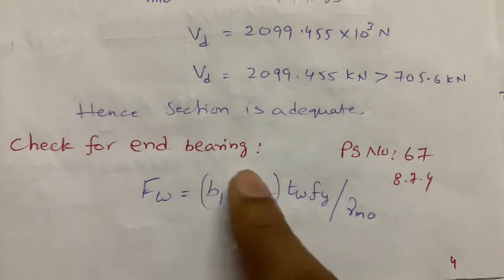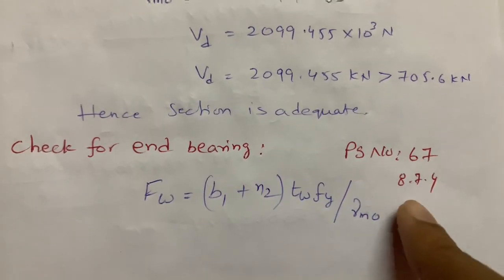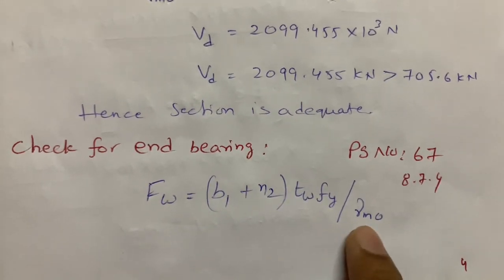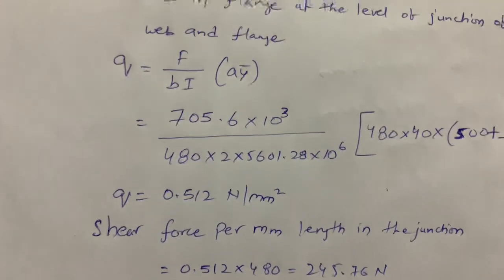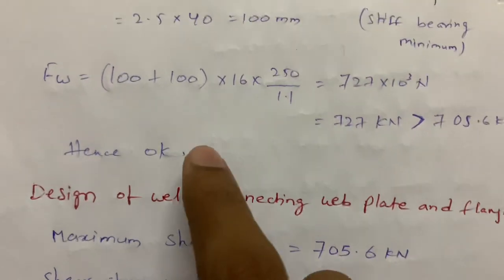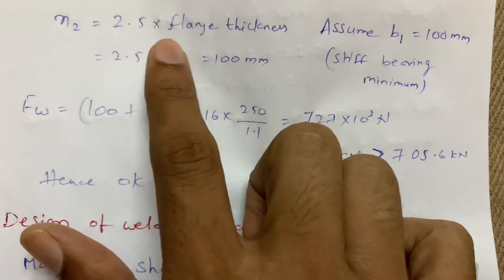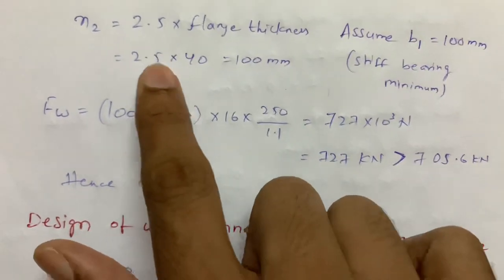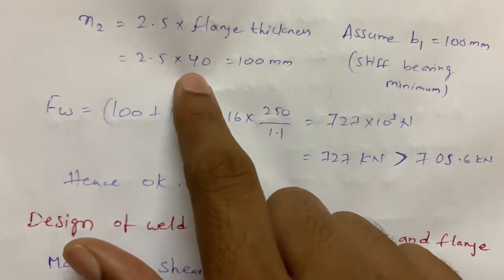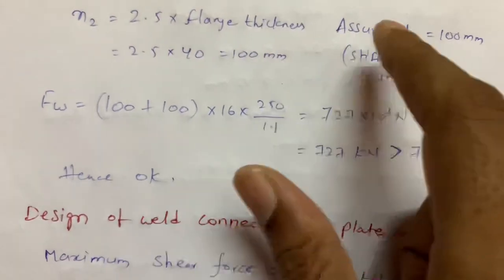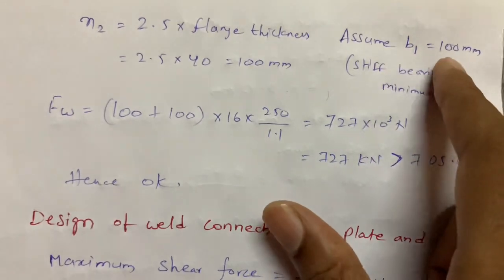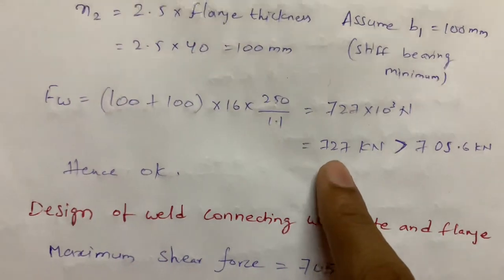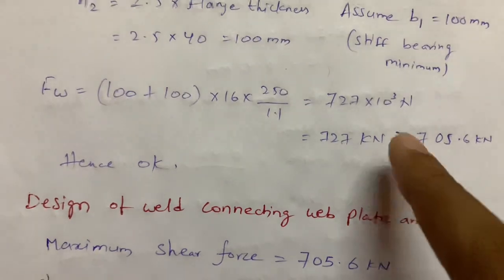Next, check for end bearing. Per IS 800:2007, page 67: Fw = (B1 + N2) × TW × Fy / γM0, where N2 = 2.5 × flange thickness = 2.5 × 40 = 100 mm, and B1 (minimum stiff bearing length) is assumed as 100 mm. Substituting all values gives Fw = 727 kN, which is greater than the shear force of 705.6 kN. Hence end bearing is satisfactory.